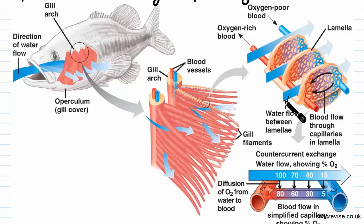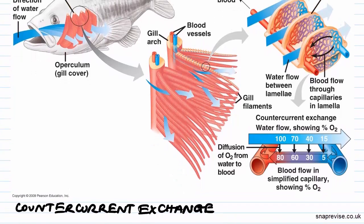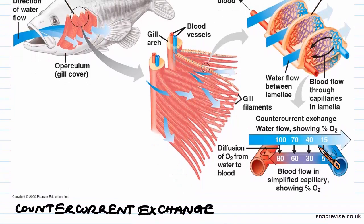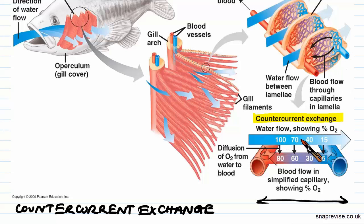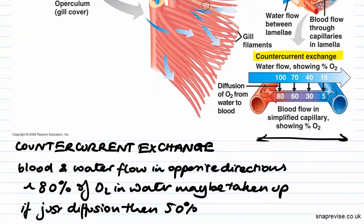This sets up a very important mechanism called counter current exchange. What this does is ensure that there is always, along the entire length of the lamella, a concentration gradient between the water and the blood flowing through the capillaries.